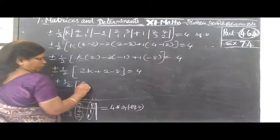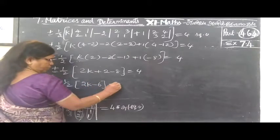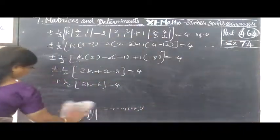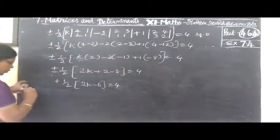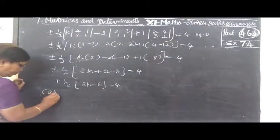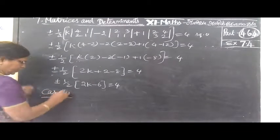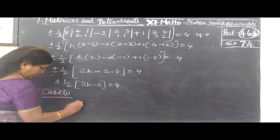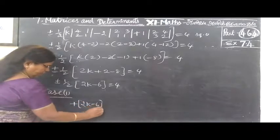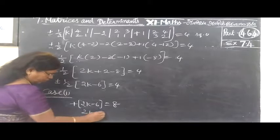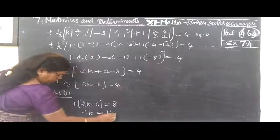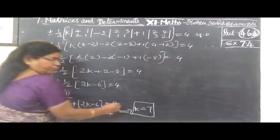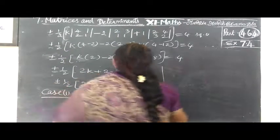So 2K minus 6 equal to 4. Minus equal to 4, minus 8. Close the page. Minus 8 equal to 8. So one answer one, we will learn the answer. The answer is case 2.